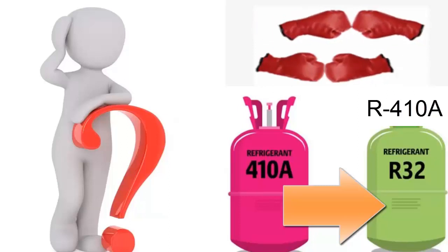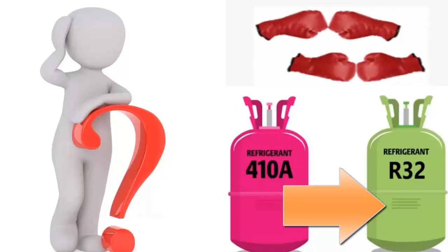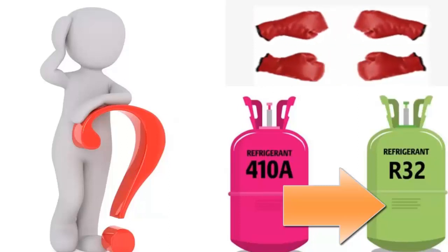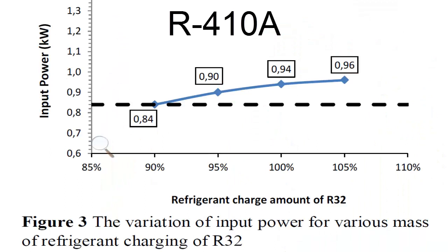8. When switching to R-32, we'll observe an increase in the refrigerant mass flow rate, leading to an uptick in discharge pressure.